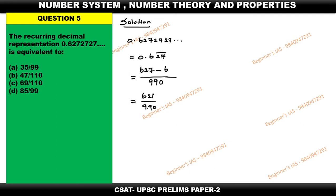These two numbers, numerator and denominator, can be divisible by 9. If you divide with 9, you are getting 69 by 110. Then you can eliminate option A and option D. Then we have to check with option B and C.